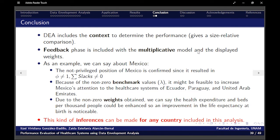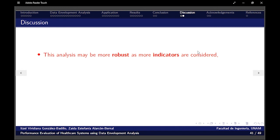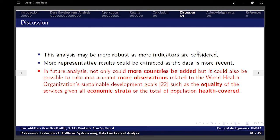And this kind of inference can be made for any country included in this analysis. Now, the discussion. This analysis may be more robust as more indicators are considered, but representative results could be extracted as the data is more recent. In future analysis, not only could more countries be added, but it could also be possible to take into account more observations related to sustainable development goals that we mentioned in the introduction, such as equality of the services given to all economic strata or the total population health coverage.